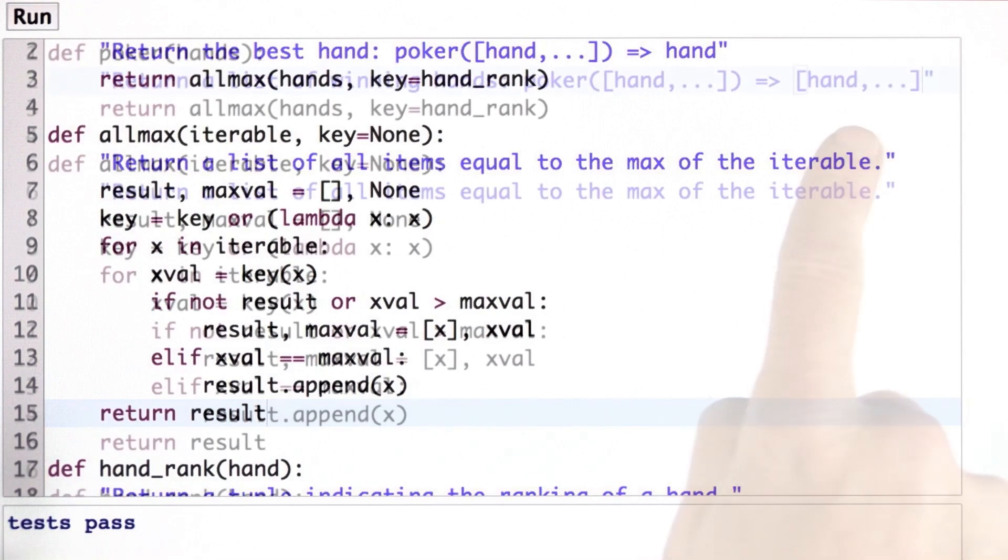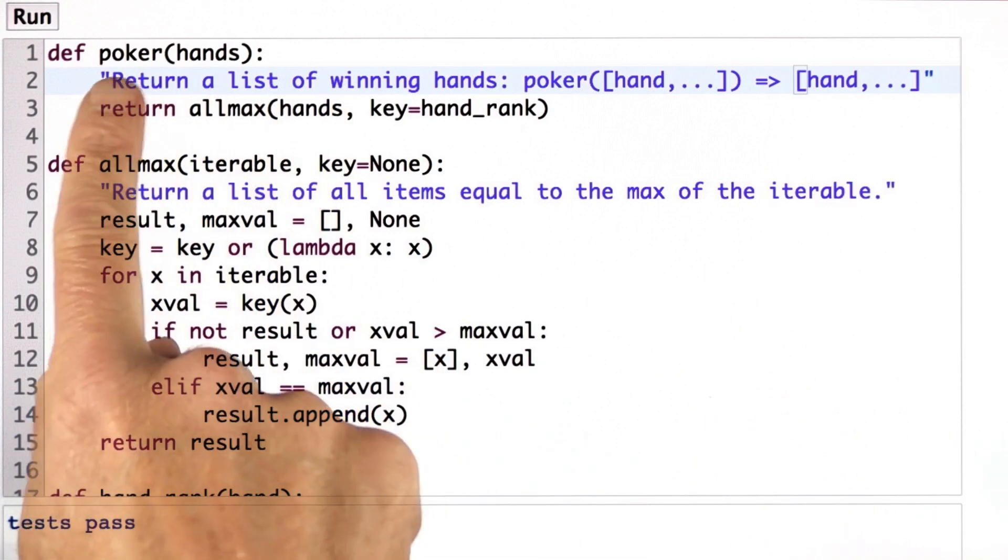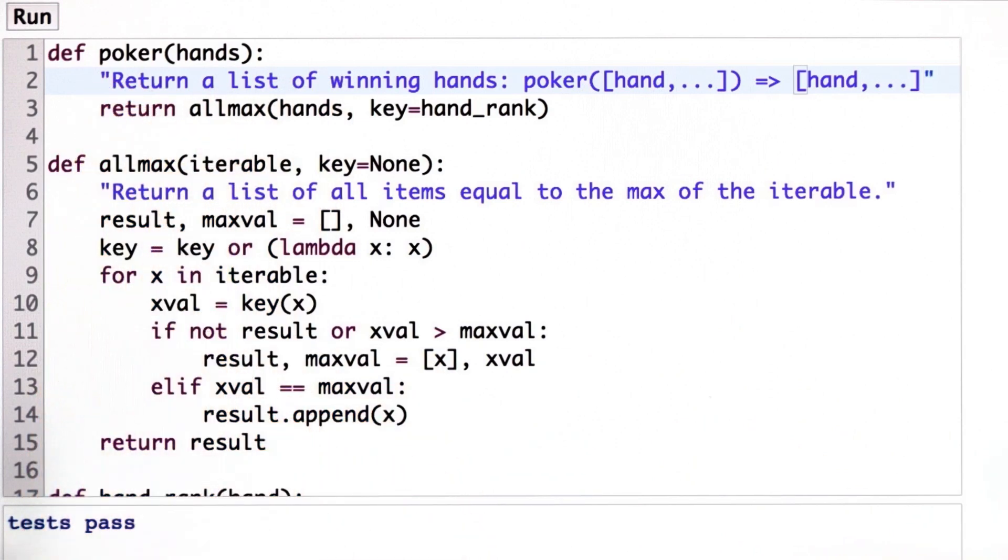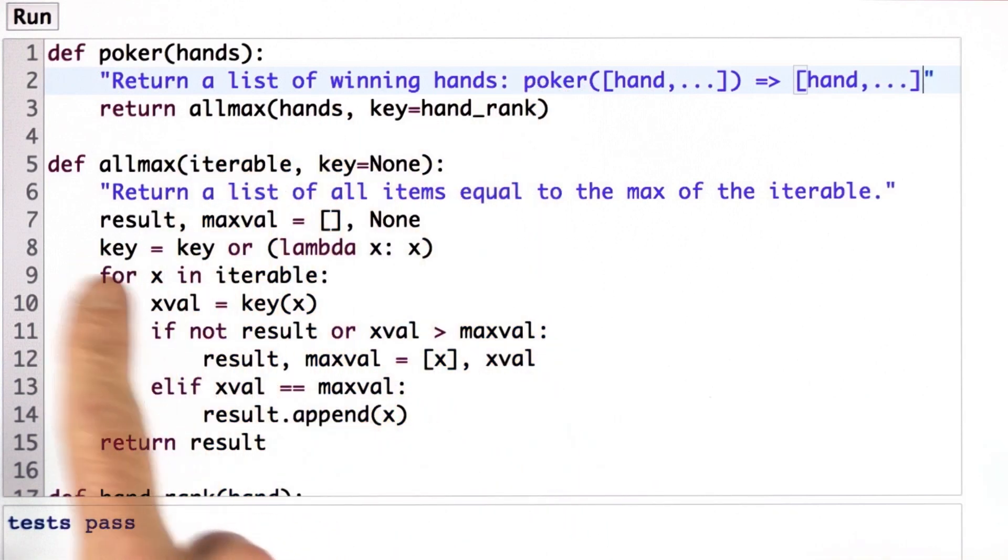I've also got to write a new documentation string here. So I've written a new documentation string for poker to say that it's returned a list of the winning hands rather than a single winning hand. I have the definition in terms of allmax, I should write more tests for allmax,